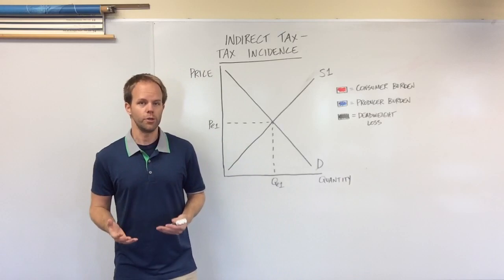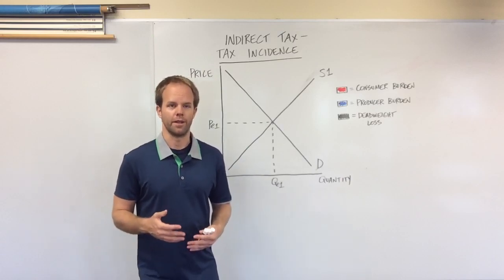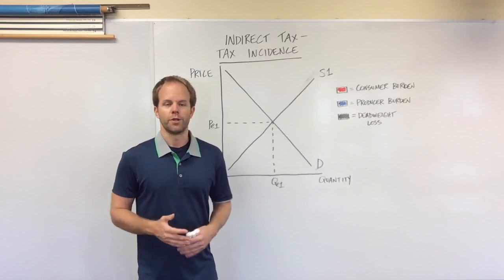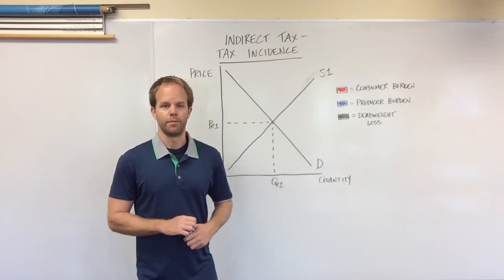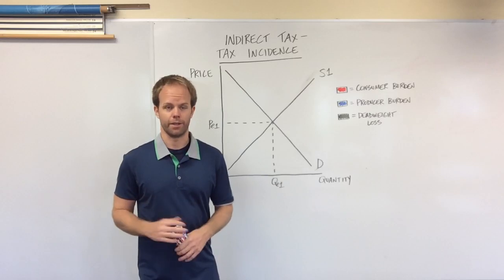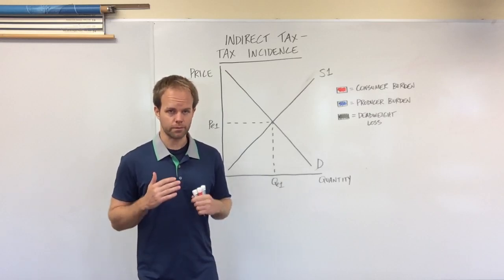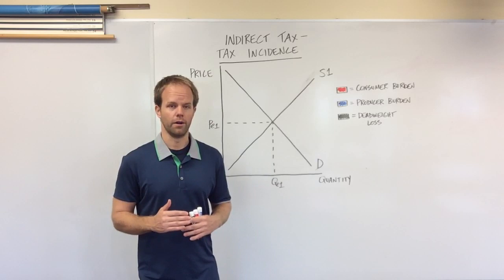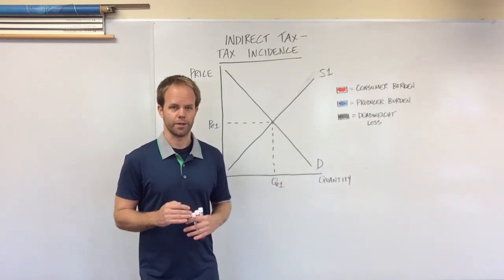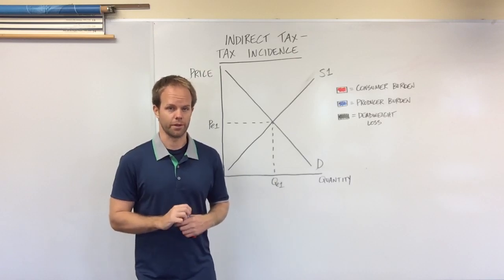Usually indirect taxes are put on things that the government doesn't want you to buy — usually things that have a negative impact on society. Cigarettes and alcohol are some of the products where the rates of the indirect tax are maybe higher than other products.